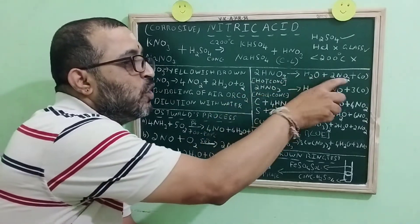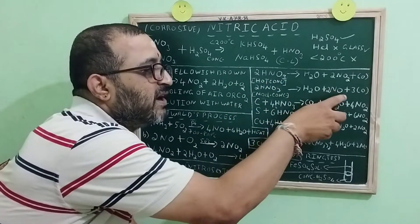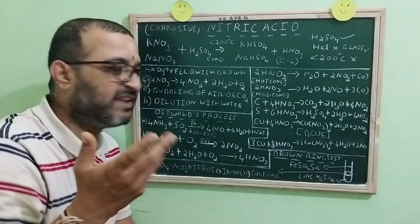If it is NO2, then the nitric acid should be hot concentrated. If the reduced product is NO, the type of nitric acid used is moderate concentration.